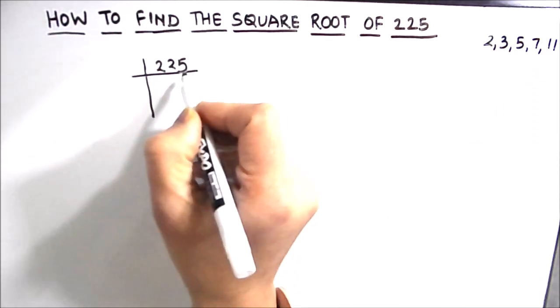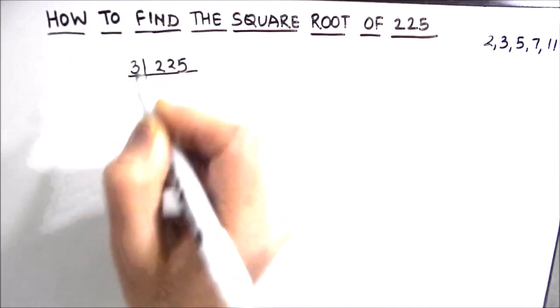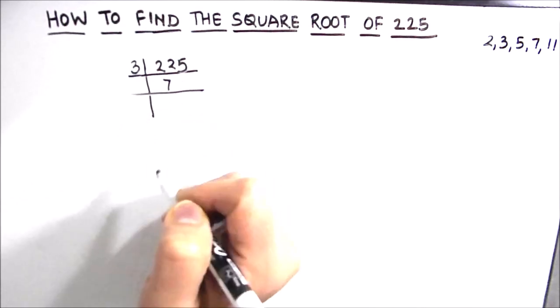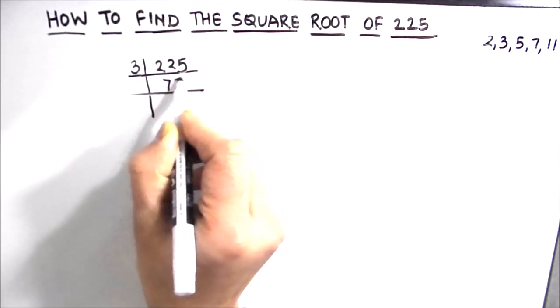So as this is an odd number we can use 3 to divide the number. 3 times 7 is 21, 1 is remainder, this becomes 15 and 3 times 5 is 15.